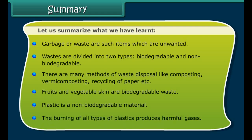Let us summarize what we have learned. Garbage or waste are such items which are unwanted. Wastes are divided into two types: biodegradable and non-biodegradable. There are many methods of waste disposal, like composting, vermicomposting, and recycling of paper. Fruits and vegetable skin are biodegradable waste, while plastic is a non-biodegradable material. The burning of all types of plastics produces harmful gases.